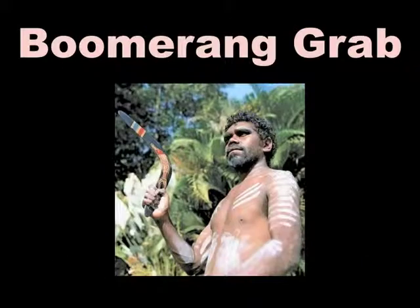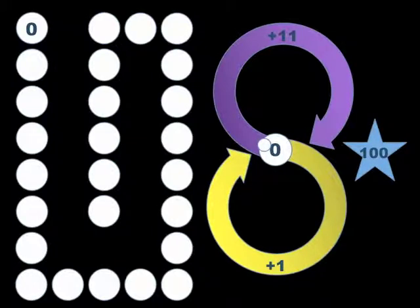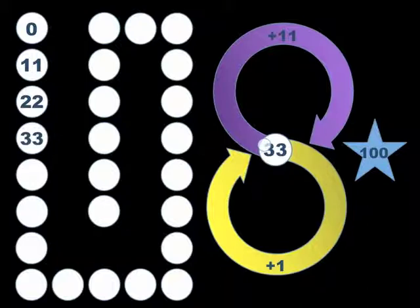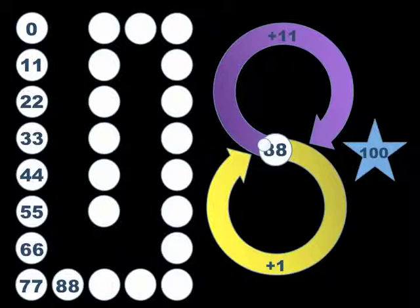Boomerang Grab is a great way to practice addition. We start with our silly little circle going round and round, representing our boomerang. We're chanting with our students: 33, 44, 55. You can see that we have a choice between plus 11 and plus 1. Can we get to 100? That's the objective here.